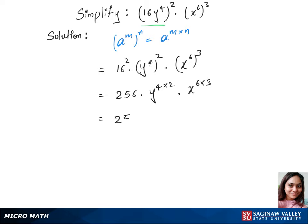This gives us 256 times y to the power 8 — since 4 times 2 is 8 — and x to the power 18 — since 6 times 3 is 18. This is our final answer.